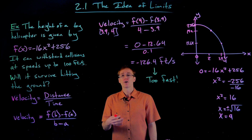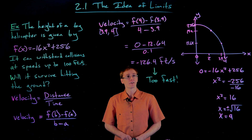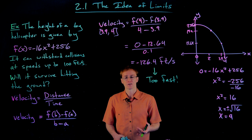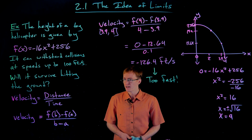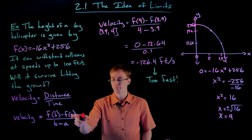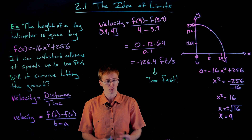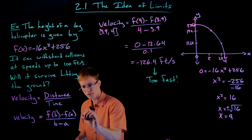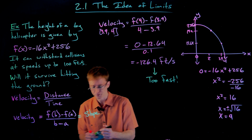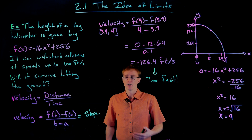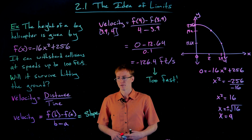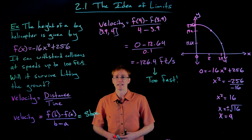The true instantaneous velocity should still be a bit greater than 126.4 feet per second. For the purposes of this example, we've gone far enough — the toy helicopter will not fly another day. So far we've done this totally numerically and algebraically, but I want to take a minute to approach it graphically as well. Going back to our velocity formula f of b minus f of a over b minus a — that should look familiar as our slope formula from previous math classes.